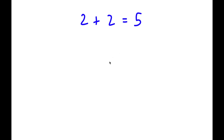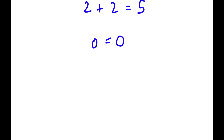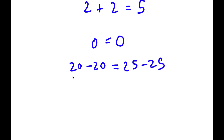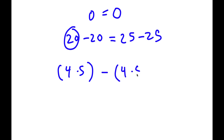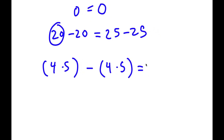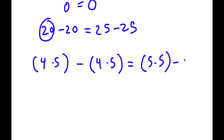So in this problem, I'm actually going to prove that 2 plus 2 is equal to 5. I'll start with 0 is equal to 0, which is obviously a true statement. For the left-hand side, I'm going to rewrite 0 as 20 minus 20, and for the right-hand side, I'm going to rewrite 0 as 25 minus 25. Now, 20 equals 4 times 5, so I rewrite as 4 times 5 minus 4 times 5. And I'm going to rewrite 25 as 5 times 5 minus 5 times 5.